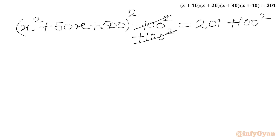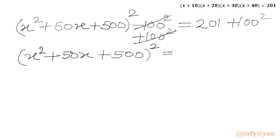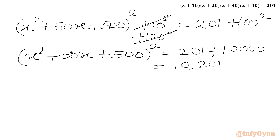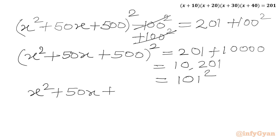From the left hand side we get x squared plus 50x plus 500, whole squared. The right hand side is 201 plus 100 squared, which is 201 plus 10000, giving 10201, which is the square of 101.